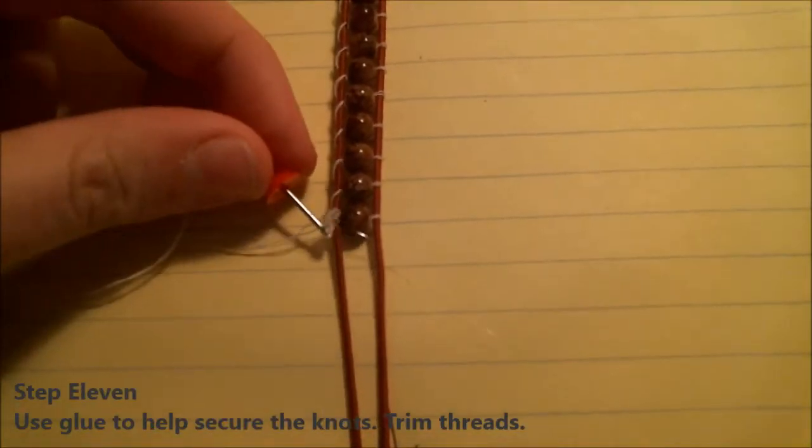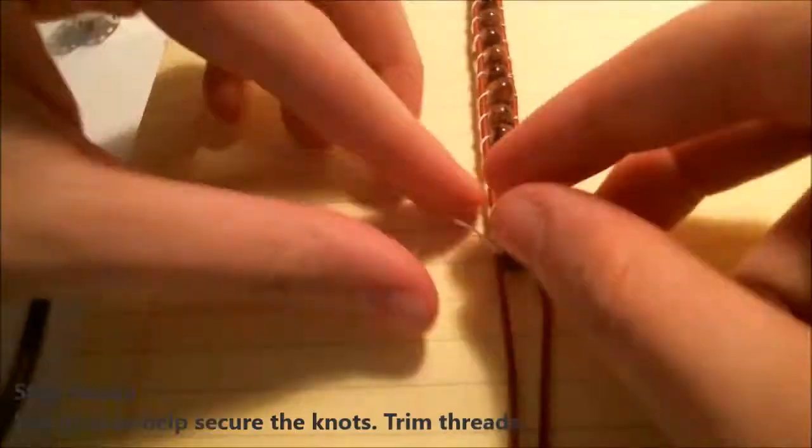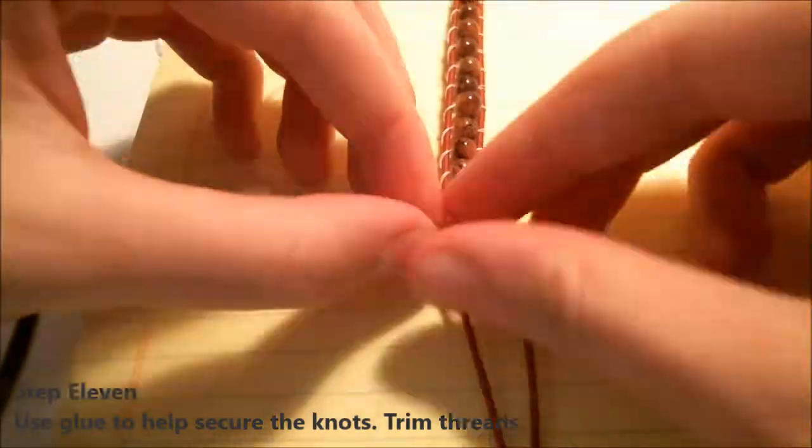Before you cut either of your threads, place a bit of glue over the knots, let it dry, and then cut your strings. Make sure to do this on the top and bottom.